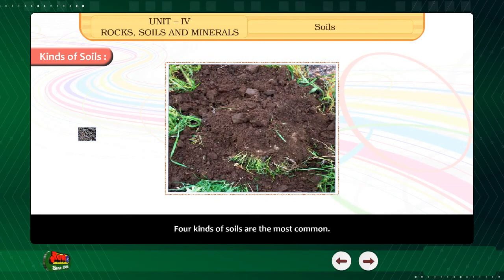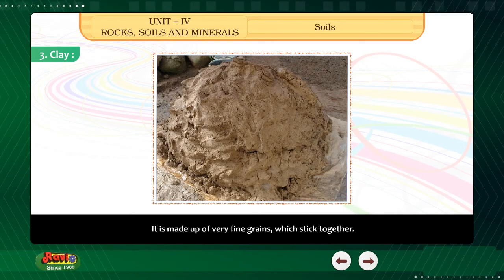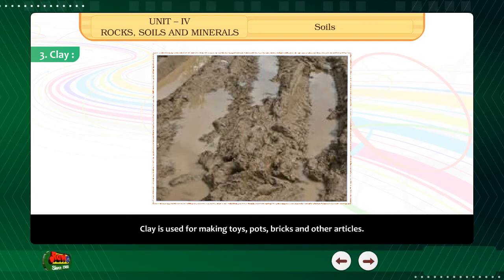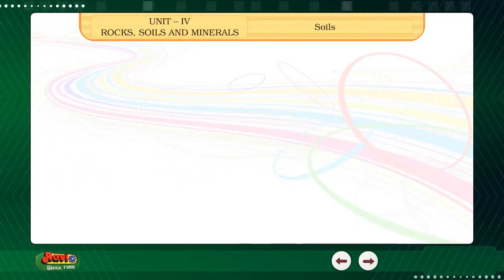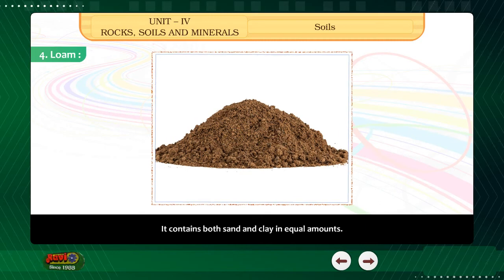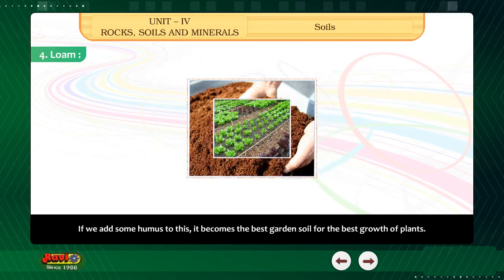3. Clay — clay is very sticky in nature. It is made up of very fine grains which stick together. It can hold a lot of water but very little air. Clay is used for making toys, pots, bricks and other articles. 4. Loam — it contains both sand and clay in equal amounts. It can hold both enough air and enough water for the growth of plants. If we add some humus to this, it becomes the best garden soil for the best growth of plants.